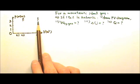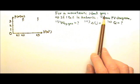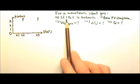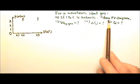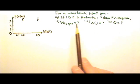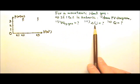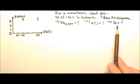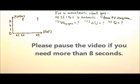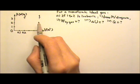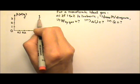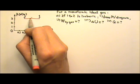The PV diagram shows two states of a monatomic ideal gas. If the process going from state 1 to state 2 is isobaric, we need to draw the PV diagram and find the work done by the gas, the change in internal energy, and the heat added to the gas. Isobaric means constant pressure, so it is a horizontal line going straight from state 1 to state 2.